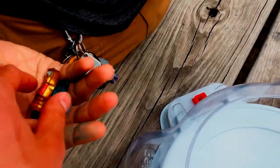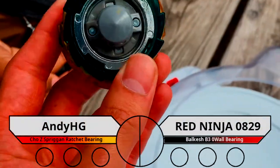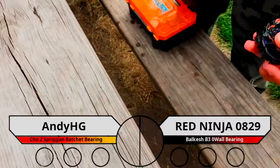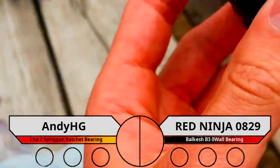So we have AndyHG with Chozy Spriggan Ratchet Parry versus Red Ninja with Balkesh B3 Zero Wall Bearing.